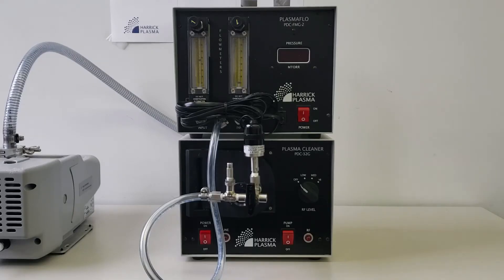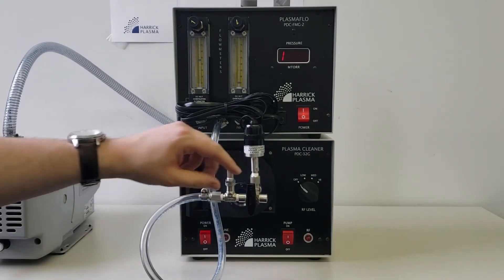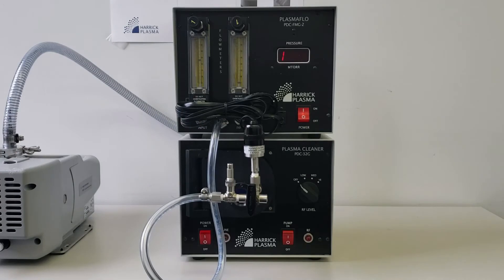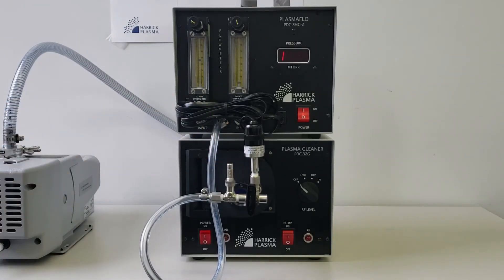Turn on the plasma flow device and the plasma cleaner main power. Make sure the three-way valve is pointing down to isolate the chamber. Close the metering valve. In the future, the metering valve can be kept at the same position to achieve the same vacuum pressure consistently.